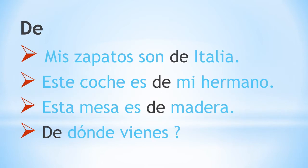DE. De is used with origin or source — basically when you tell the origin of something, from where it is originated. Por ejemplo, mis zapatos son de Italia. My shoes are from Italy.